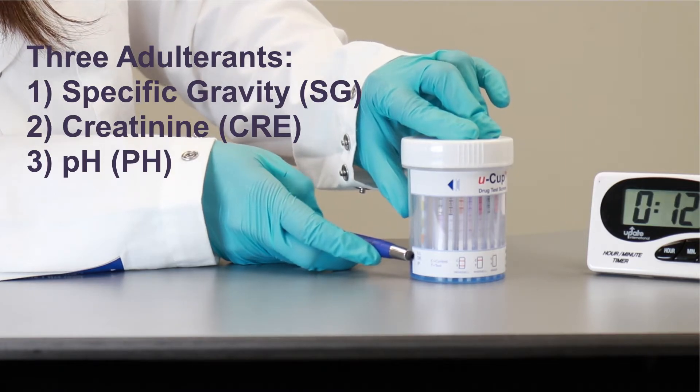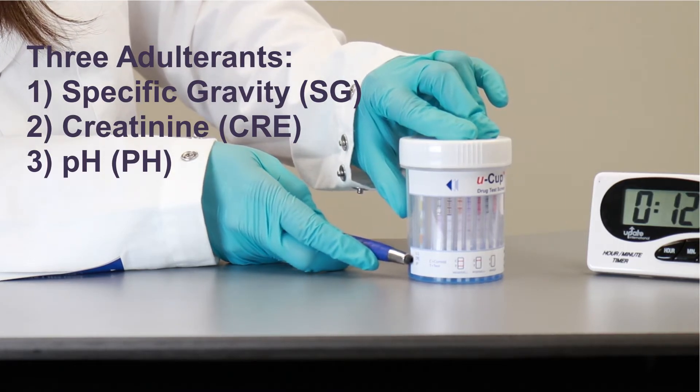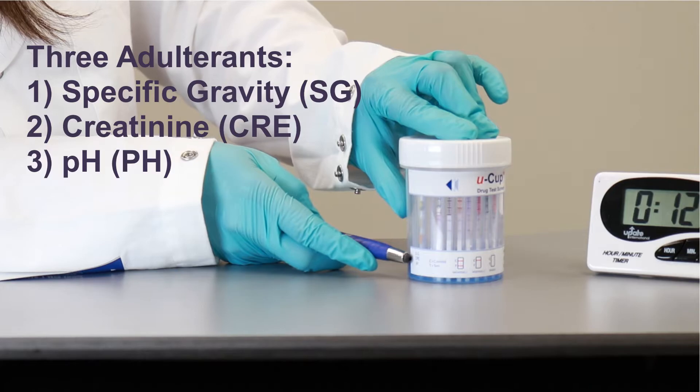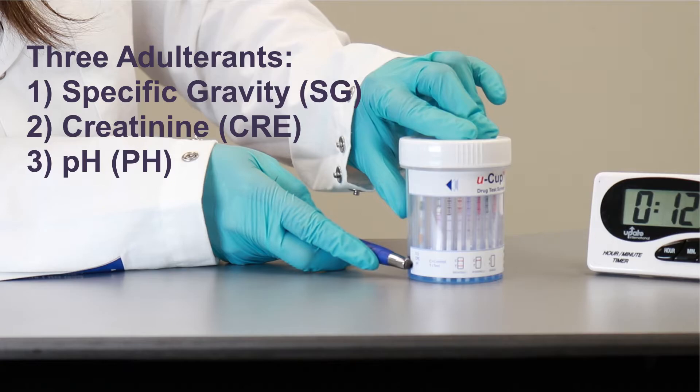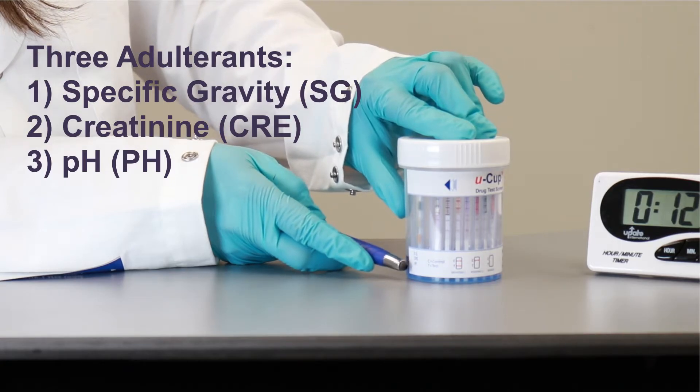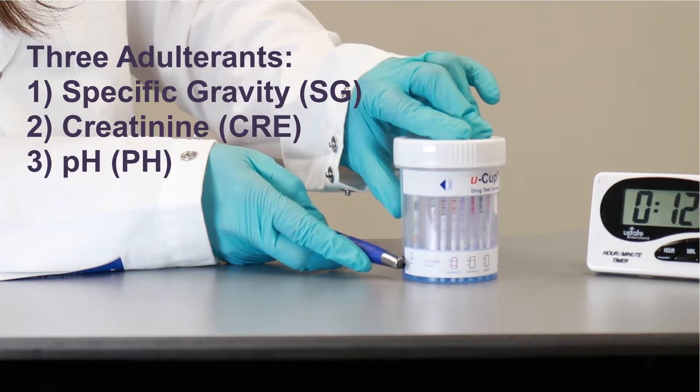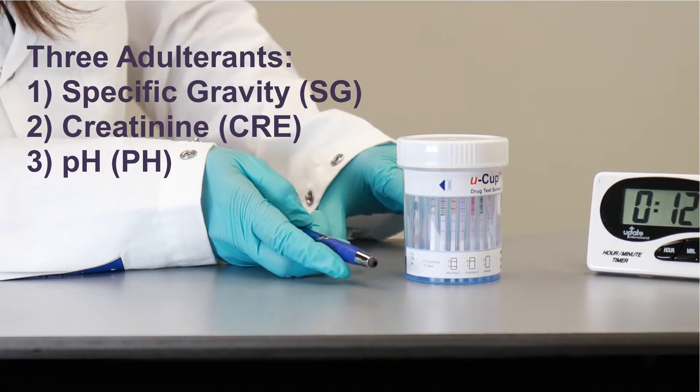And you have creatinine, which is an amino acid that comes from a muscular protein, to be able to tell what the levels are in normal urine. And the pH to make sure there is no adulteration due to oxidants, or any other products that are available to adulterate urine sample.